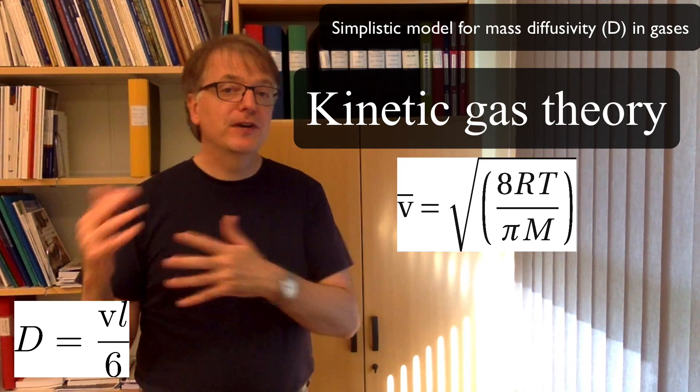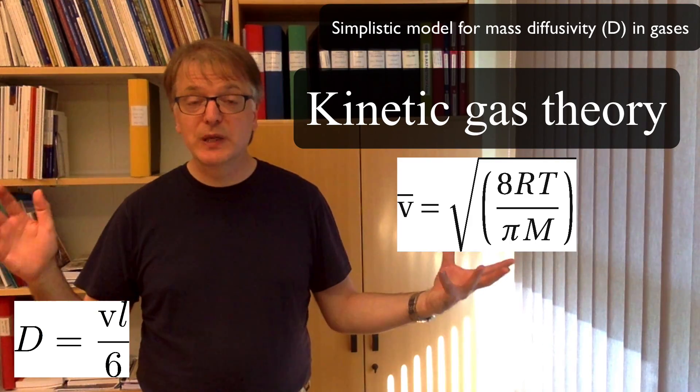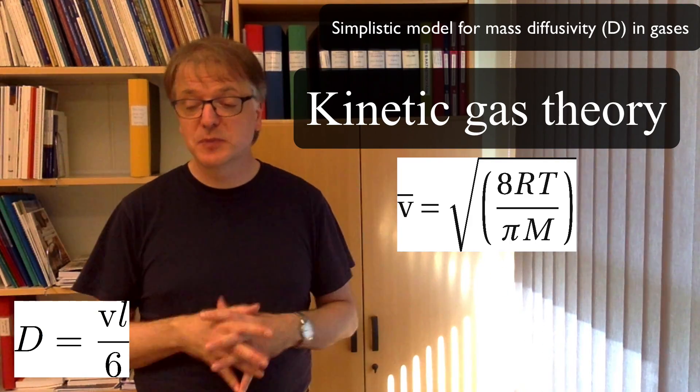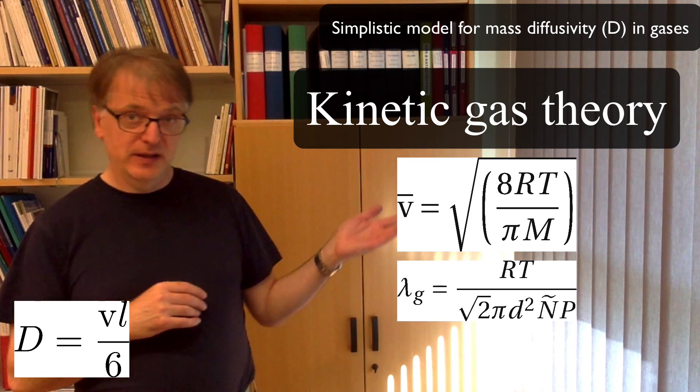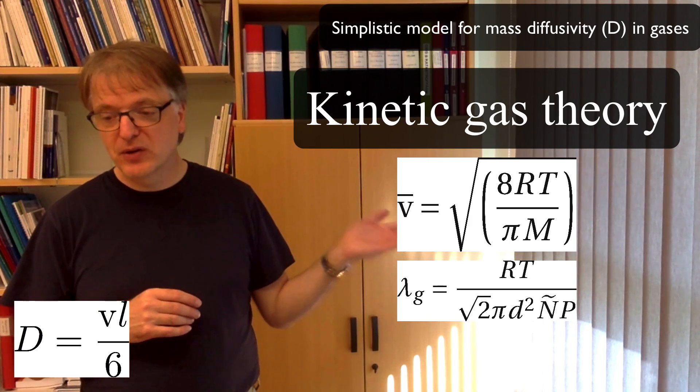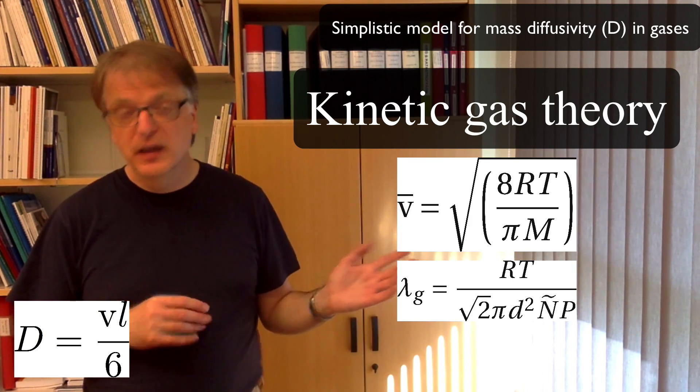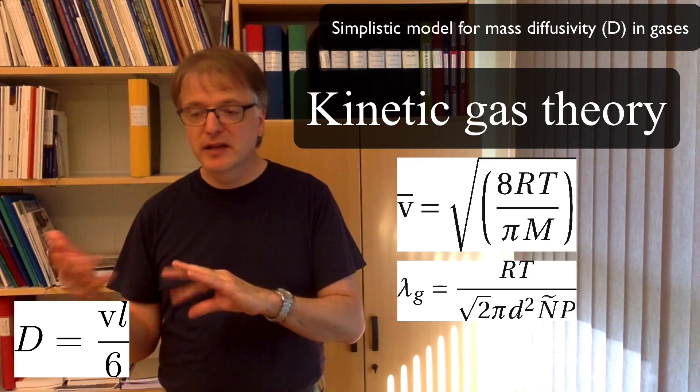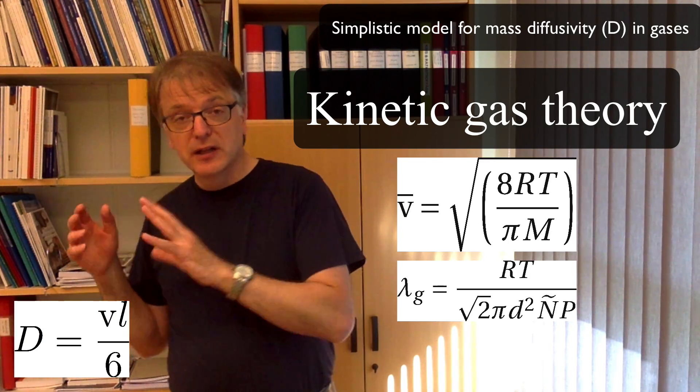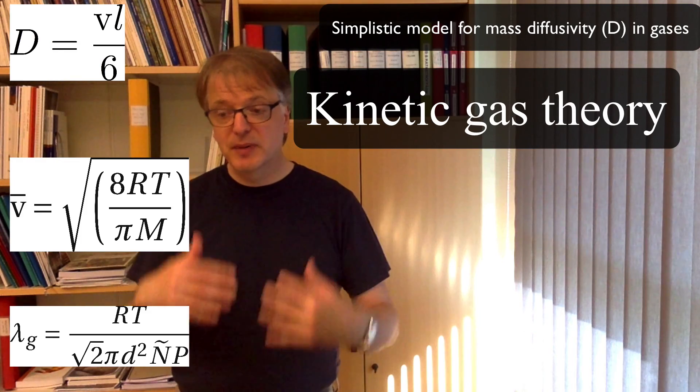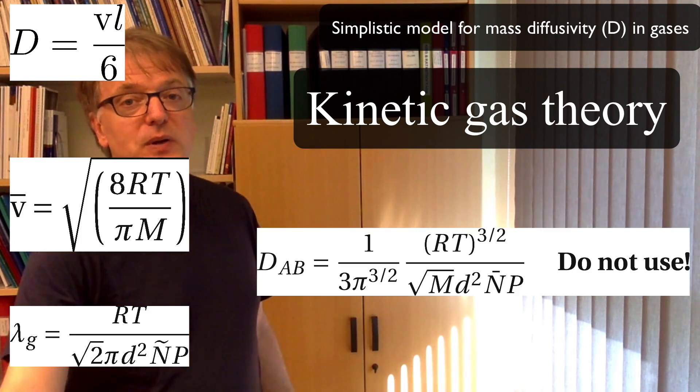The mean free path, which is the same as the distance between collision, the average distance between collision, called lambda here, can be calculated like this. And if you just combine these two and say, let's assume that the diffusivity equals the velocity times the distance divided by six, then we get this equation here.